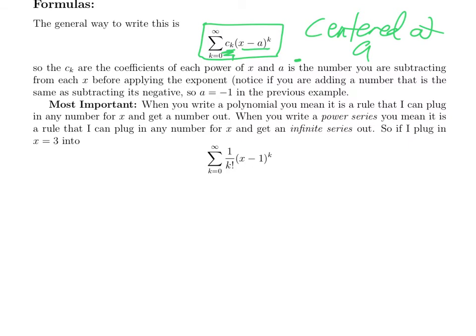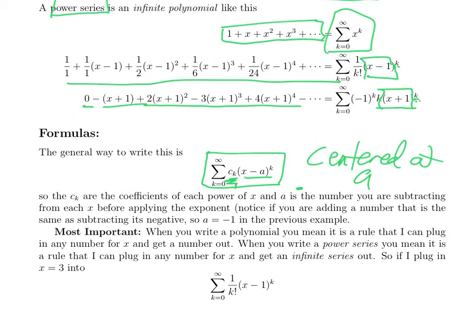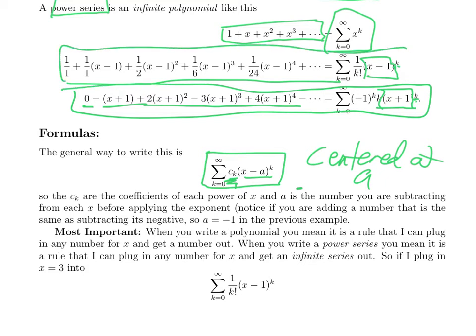So in this example, this is a power series centered at minus 1. This is a power series centered at 1, and this is a power series centered at 0.